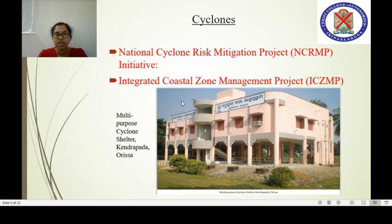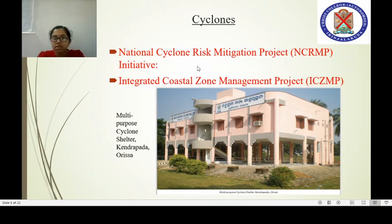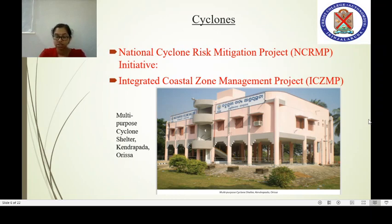One such multi-purpose cyclone shelter home is shown here, located in Odisha. Another initiative for cyclone mitigation and prevention is the Integrated Coastal Zone Management Project (ICZMP), introduced by the Ministry of Environment and Forest under the Government of India. Its aim is to assist the Government of India in building national capacity for implementing a comprehensive coastal management approach across the country.